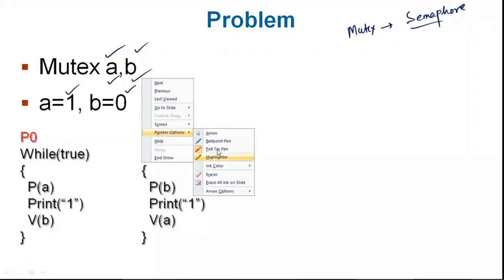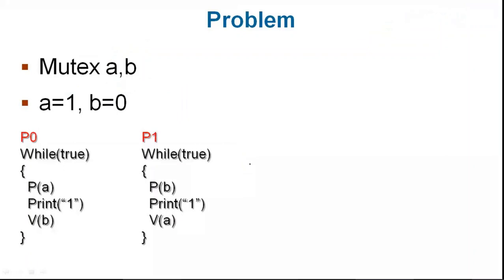Now the process P0 is running. What does P0 do? While true: P(A), print 1, and V(B).